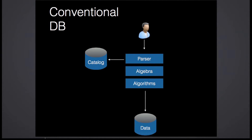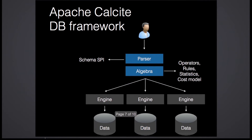We started by looking at the conventional database where you've got a parser, the relational algebra, an optimizer, and so forth. It owns its own data and has its own algorithms for joining. It's all in one hermetically sealed box. So we deconstructed that — we stripped away the data and the algorithms that process that data. We got rid of the catalog and replaced it with an SPI so you can ask what tables and schemas exist. What we were left with was a parser — which is actually optional — and an algebra, an implementation of the relational algebra. That's what Apache Calcite is: this relational algebra and the stuff around it.